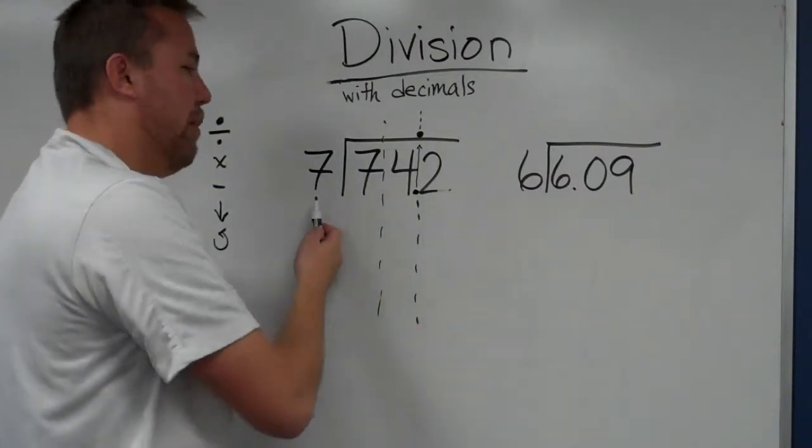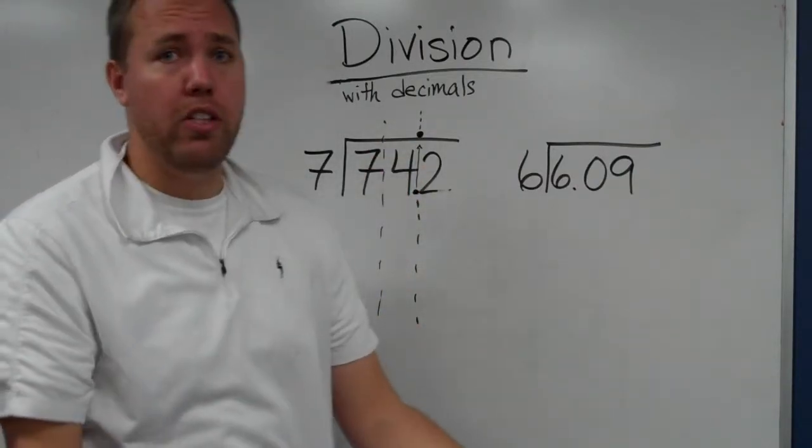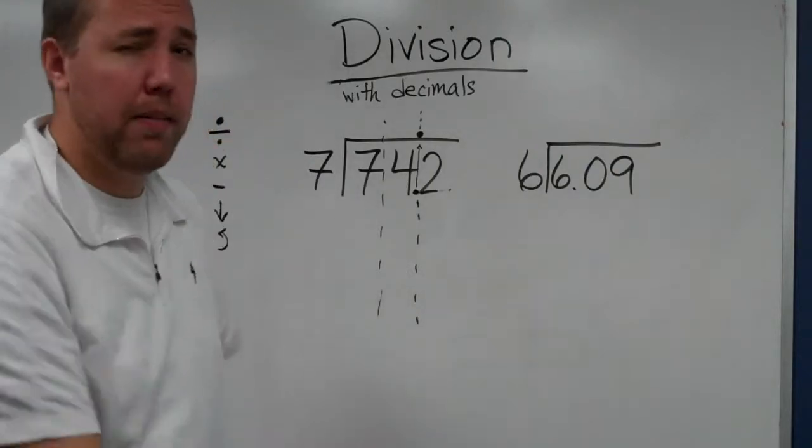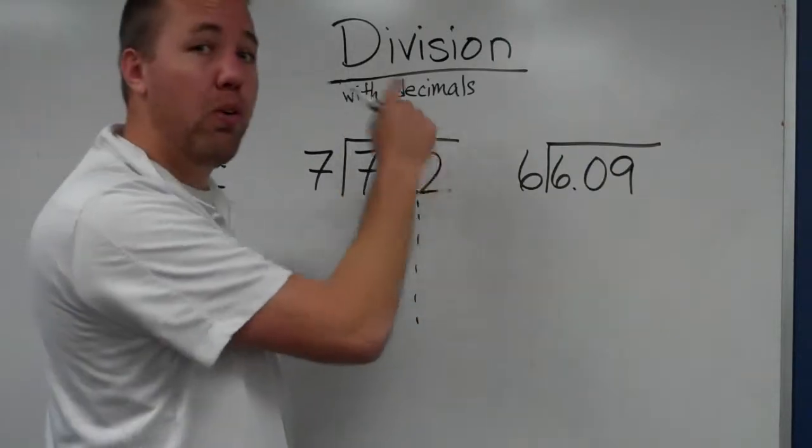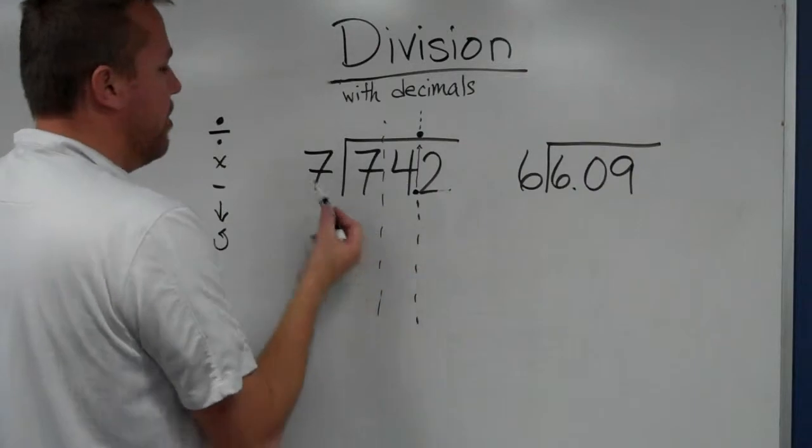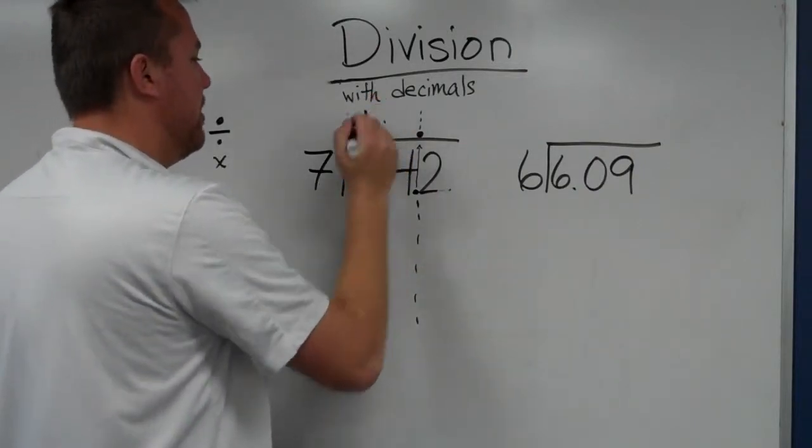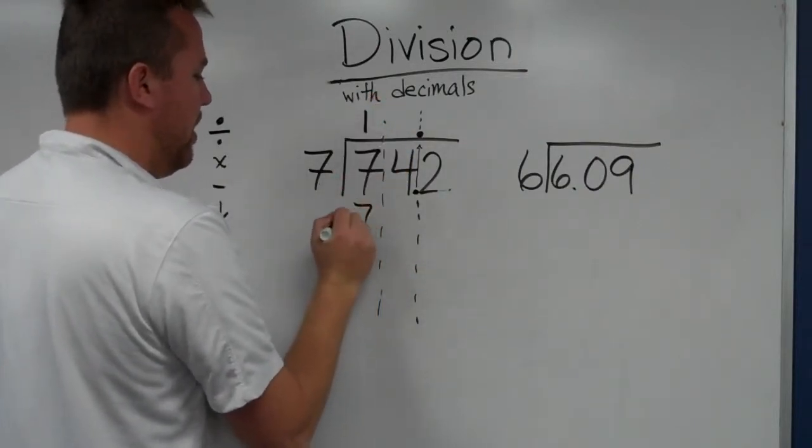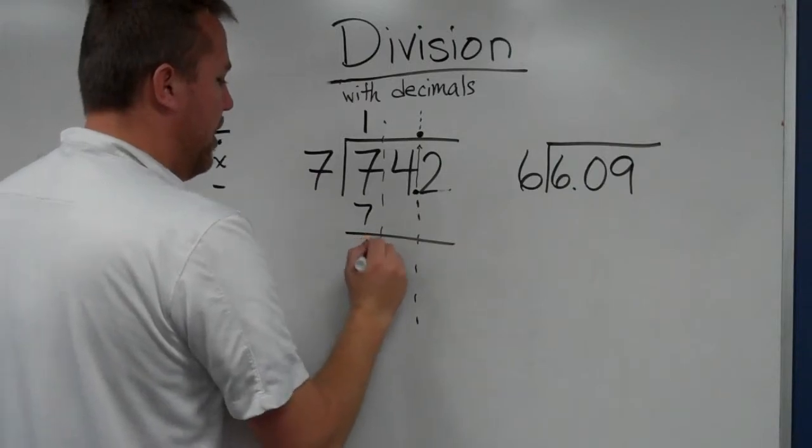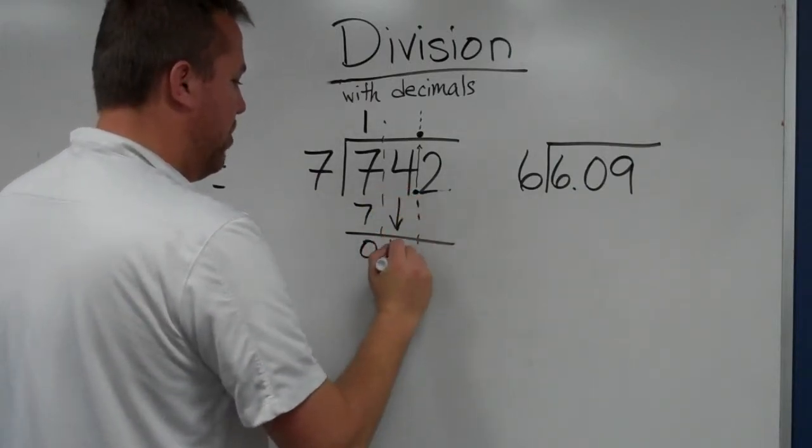Same process. We've brought it up, so now it's just 742 divided by 7. We're not worrying about the decimal point. It's already in the quotient, already in the answer. So 7 goes into 7 one time. 7 times 1 is 7. Sister subtracts and gets 0. Brother brings down the 4.